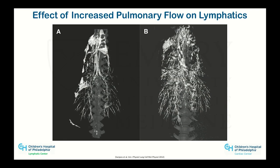Increased pulmonary flow also affects lymphatics. Work done by our collaborator Sanjeev from UCSF in animals with increased pulmonary blood flow shows normal lymph channels in the lungs versus what happens when you have excess pulmonary flow leading to pulmonary edema — the lymphatic channels in the lungs become engorged.